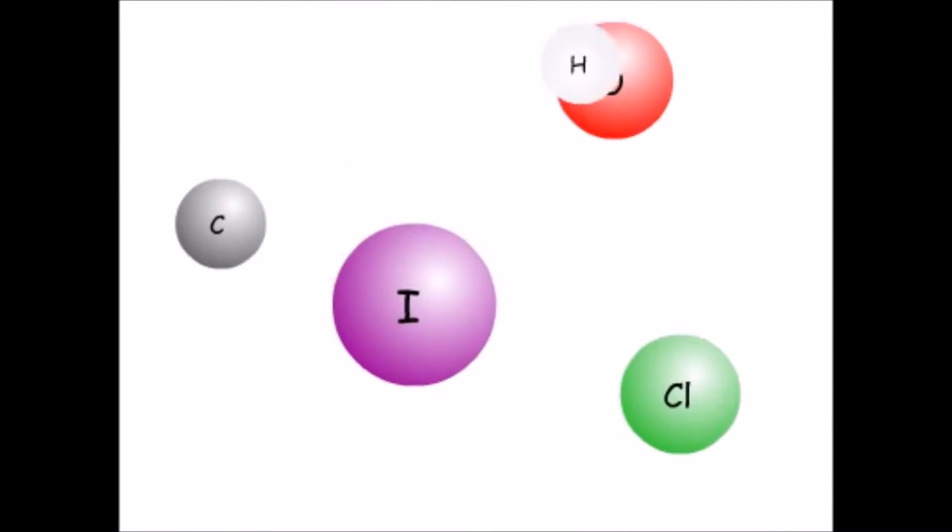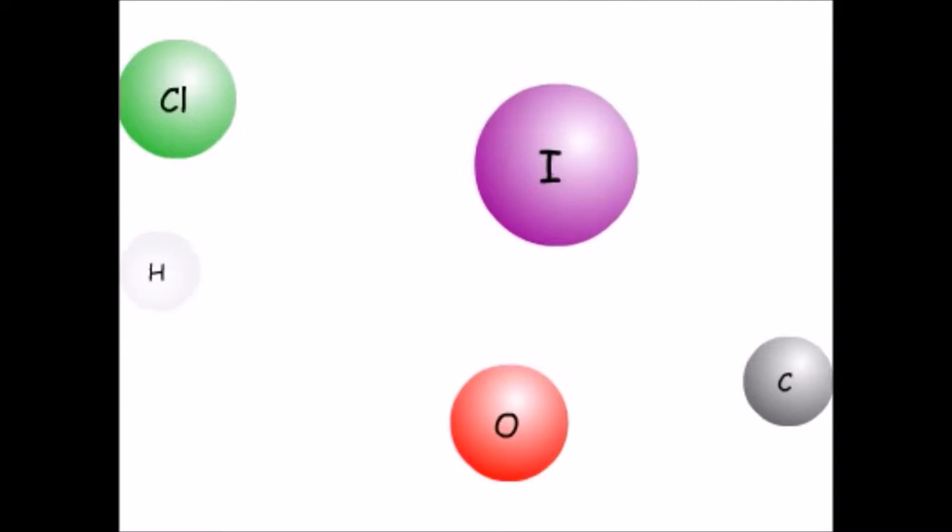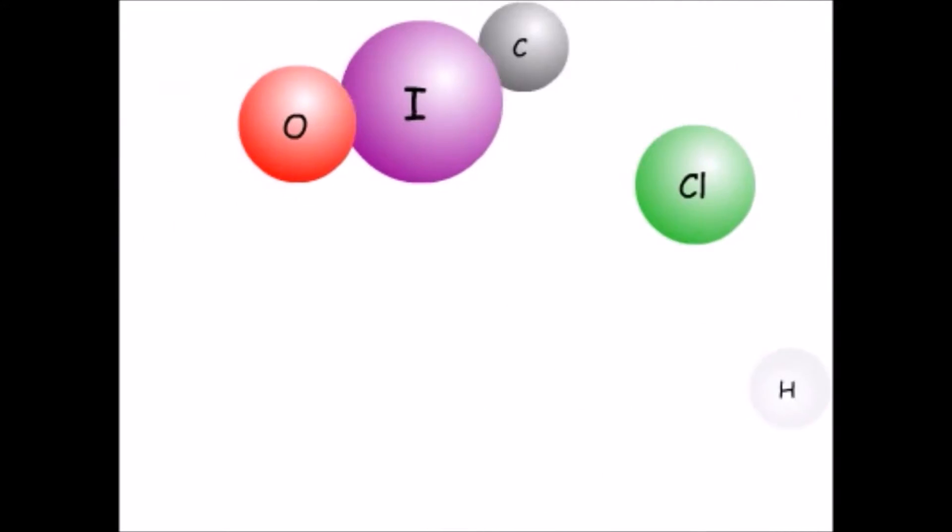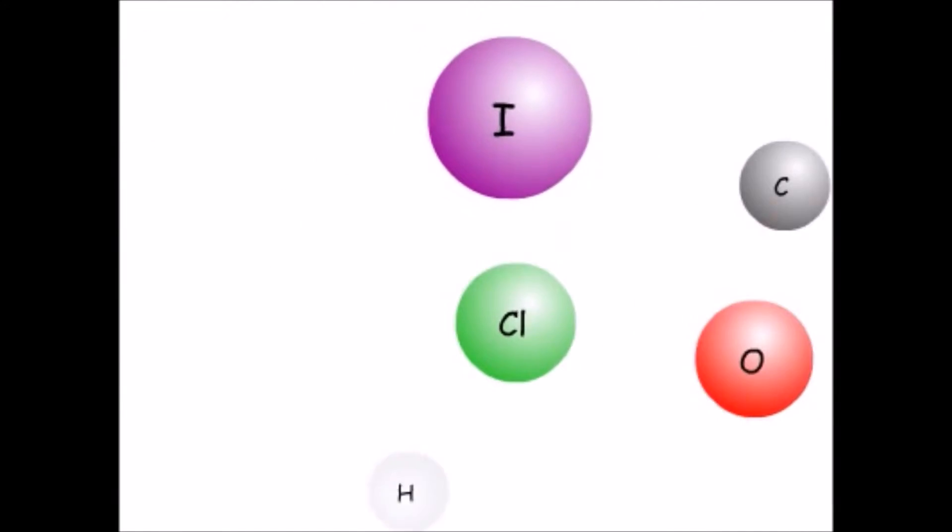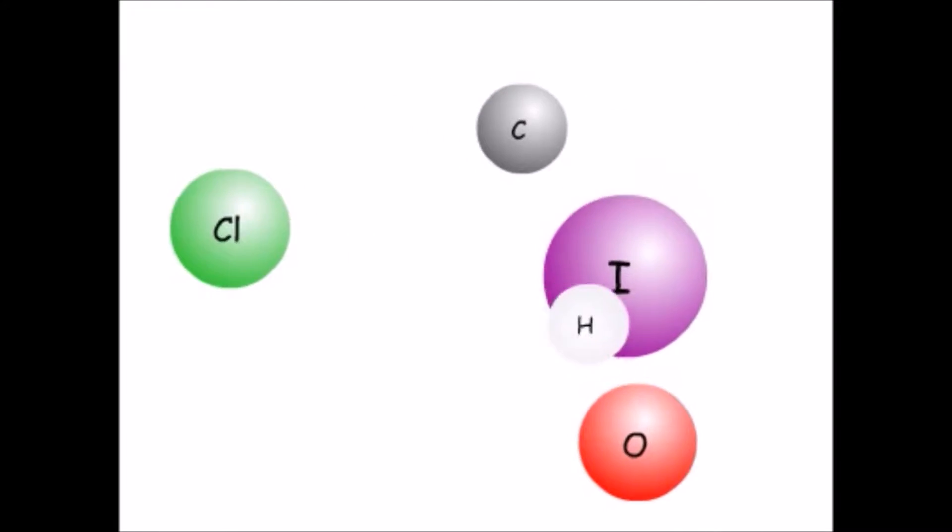For atoms to be able to share their electrons in a covalent bond, they must have the same or similar attraction for the valence electron of their partner atom. Every type of atom, that is, every element, has a different attraction for the electrons in a bond.